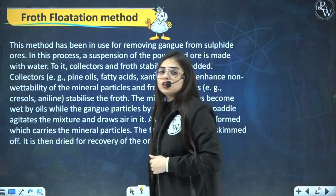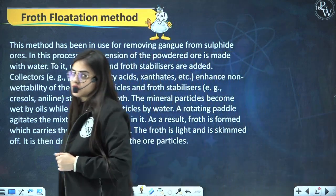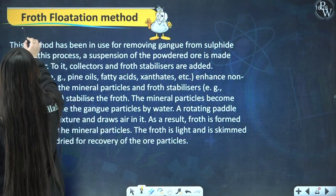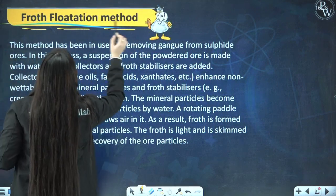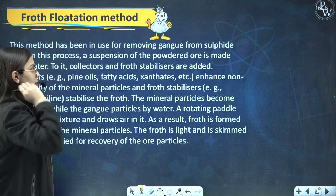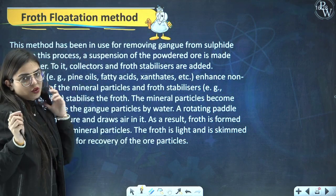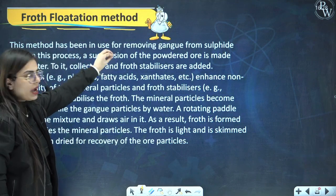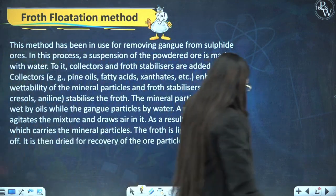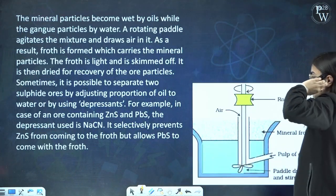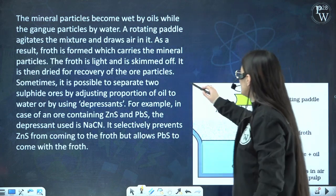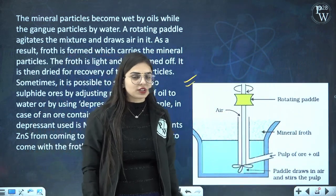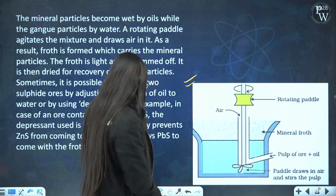The next part is the froth-flotation process. This is a really very important method. I'll show you the diagram for froth-flotation process — first observe the diagram, then we will understand it. We have a rotating pedal and here we have mineral froth. Froth in Hindi is basically 'jhaag banana'.